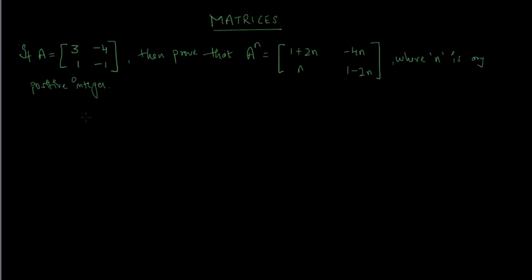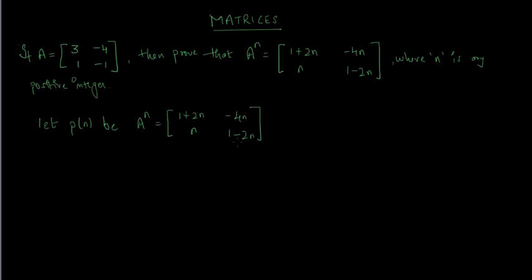So this is our question — if matrix A is given, you have to prove that A raised to the power n equals that expression. You have to link it with the concept of PMI. The proof is divided into three steps. The first step is to let P(n) be the statement: A raised to the power n equals [1+2n, -4n; n, 1-2n].